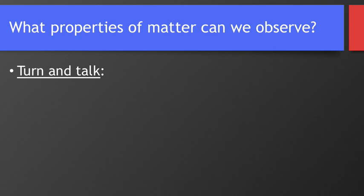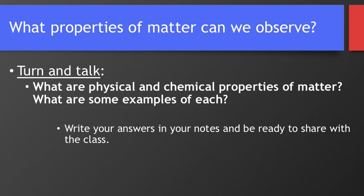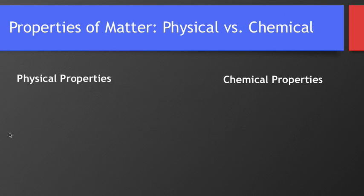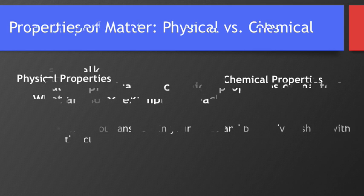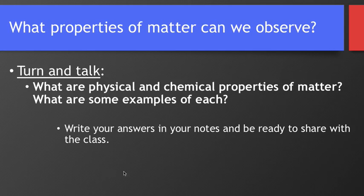So let's look at some properties of matter that we can observe. Before I talk about it I want you to pause the video. I want you to think what are some physical and chemical properties of matter? What are some examples of each? What is the definition of physical property? What is the definition of a chemical property? What are some examples? Take a few minutes and think about that and then press play.